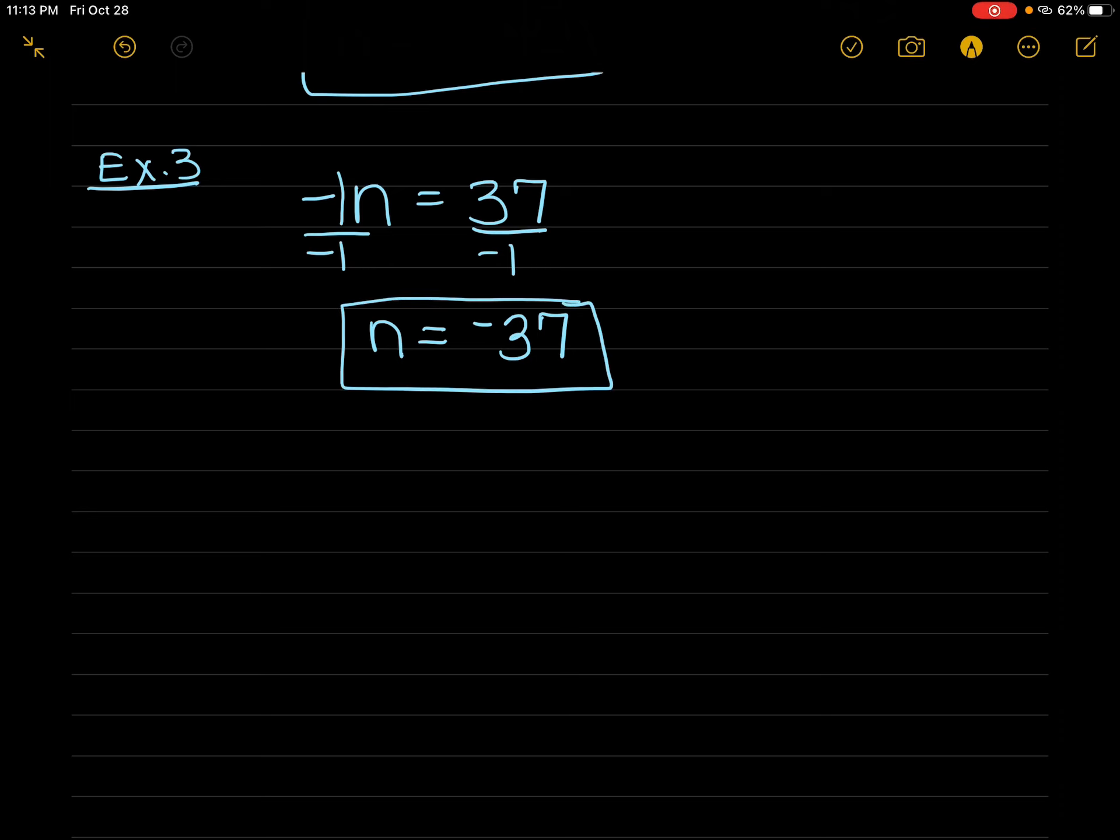Here's another way to do this problem, a shorter way. If I have a negative on this side, I can just move it over to the other side. I can only do this if there's only one thing on each side.